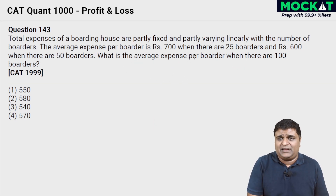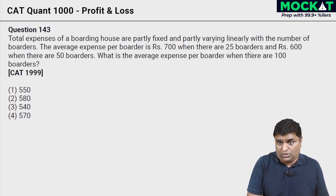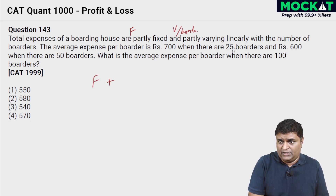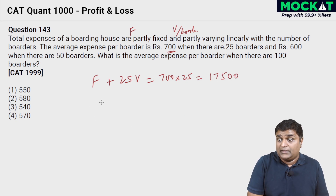Question 143 involves fixed cost plus variable cost. Total expense is partly fixed and partly varying linearly with the number of boarders. Let the number of boarders be n. Let F be fixed cost and V be variable cost per boarder. With 25 boarders at average 700 rupees, total cost is F plus 25V equals 700 times 25, which is 17,500.